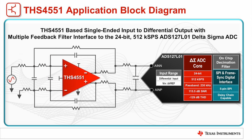One of the most common applications for the THS4551 is to drive the input of high-resolution analog-to-digital converters. This block diagram shows the amplifier configured to convert a single-ended input to a differential output with a multiple feedback filter driving TI's fully differential ADS127-L01 24-bit Precision Delta Sigma ADC.